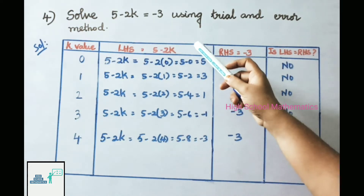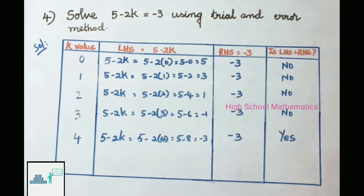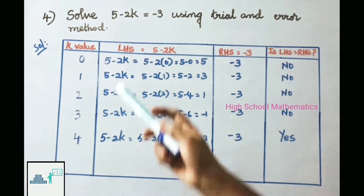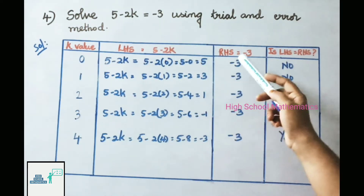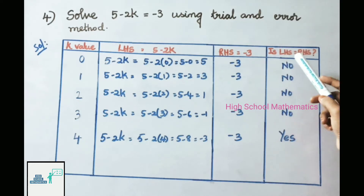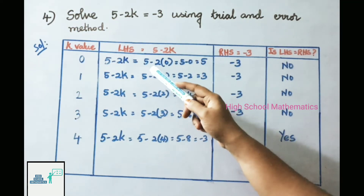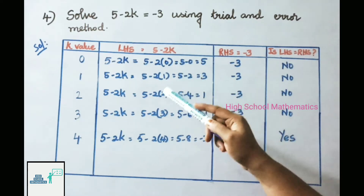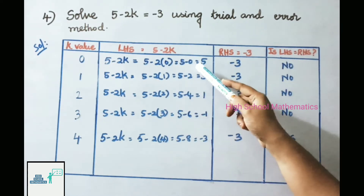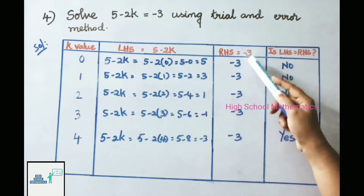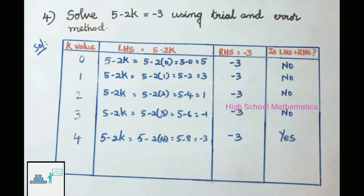Question 4: solve 5 - 2k = -3 using trial and error method. Using a table with columns: k value, LHS = 5 - 2k, RHS = -3, and whether LHS = RHS. When k = 0: LHS = 5 - 0 = 5, RHS = -3, not equal. When k = 1: LHS = 5 - 2 = 3, RHS = -3, not equal.